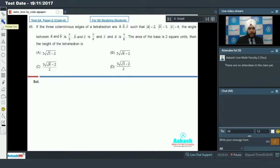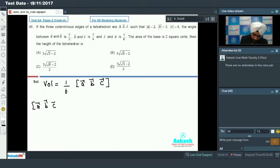Let us move on to 45. Question number 45: If three co-terminus edges of a tetrahedron are vectors A, B, C such that mod A is 2, mod B is 3, mod C is 4, the angle between A and B is pi by 3, B and C is pi by 4, C and A is pi by 6. If the area of base is 2 square units, then the height of the tetrahedron is what I require. First of all, to find height, I need to find volume because area of base is already given.